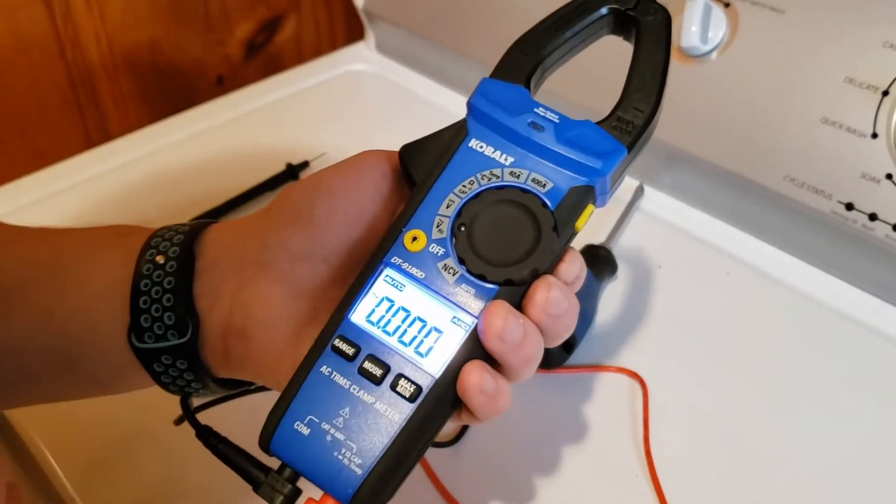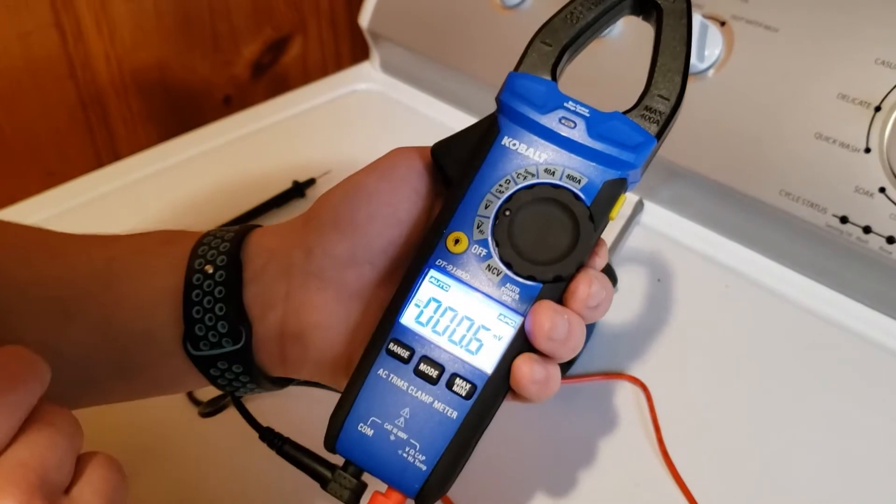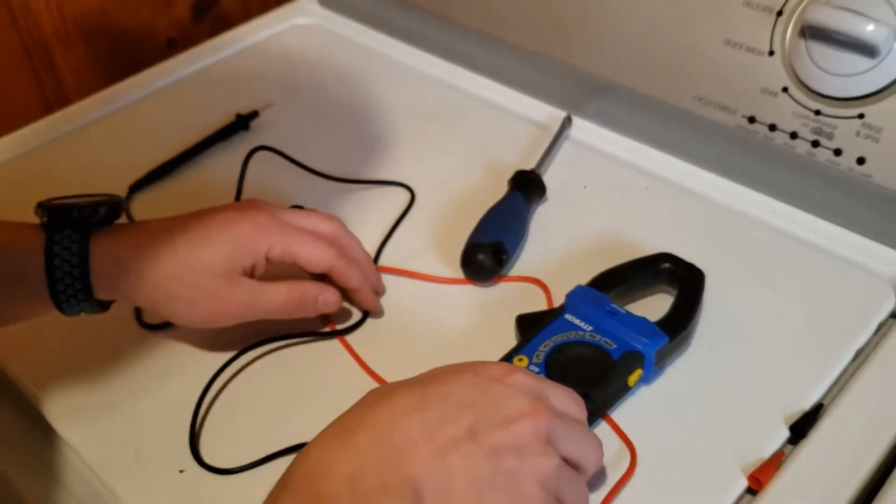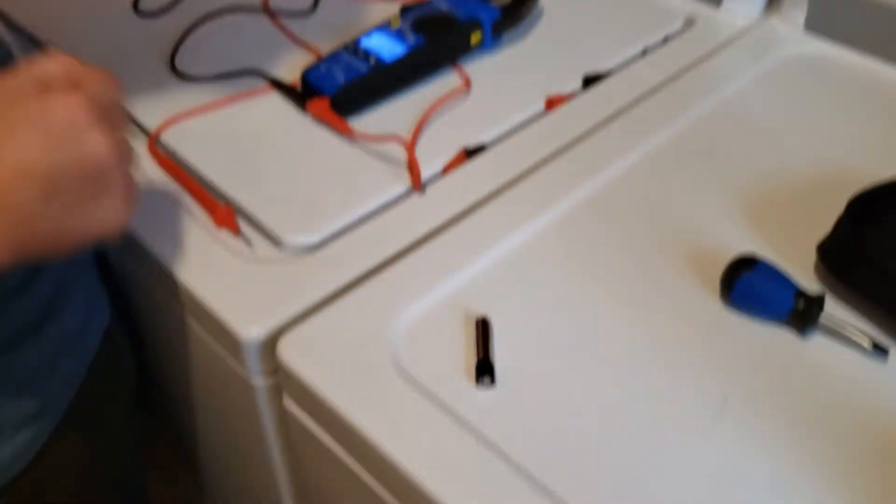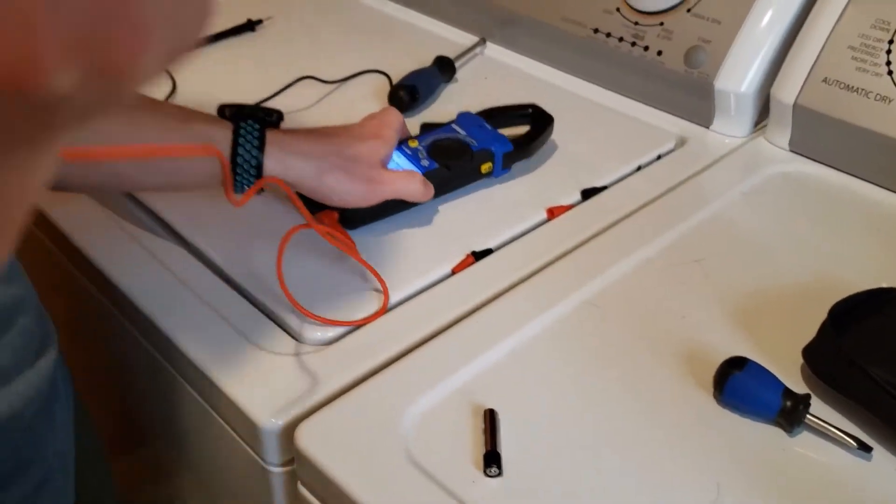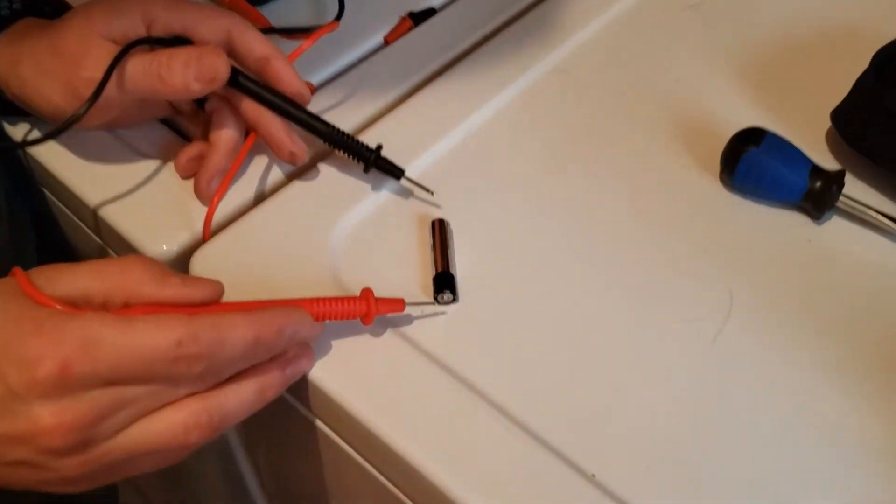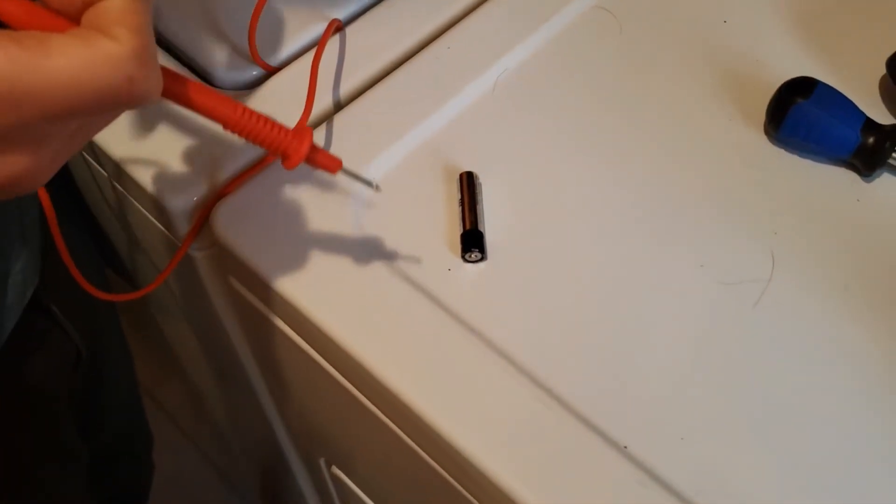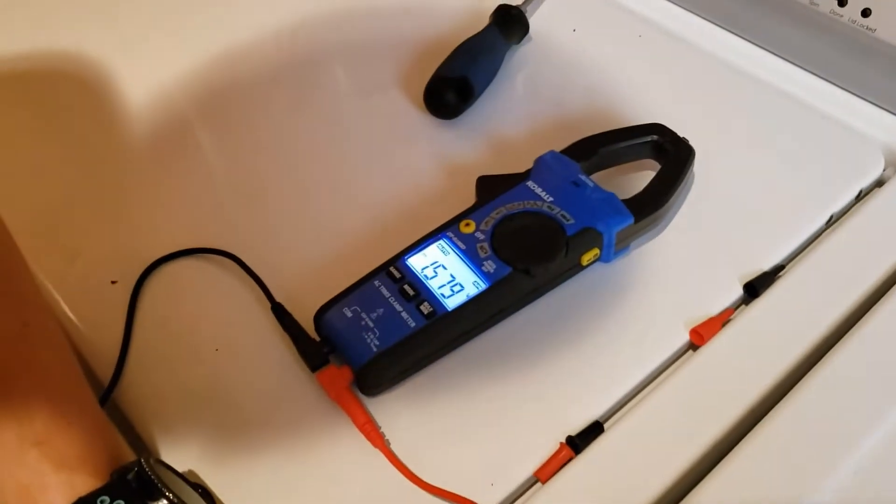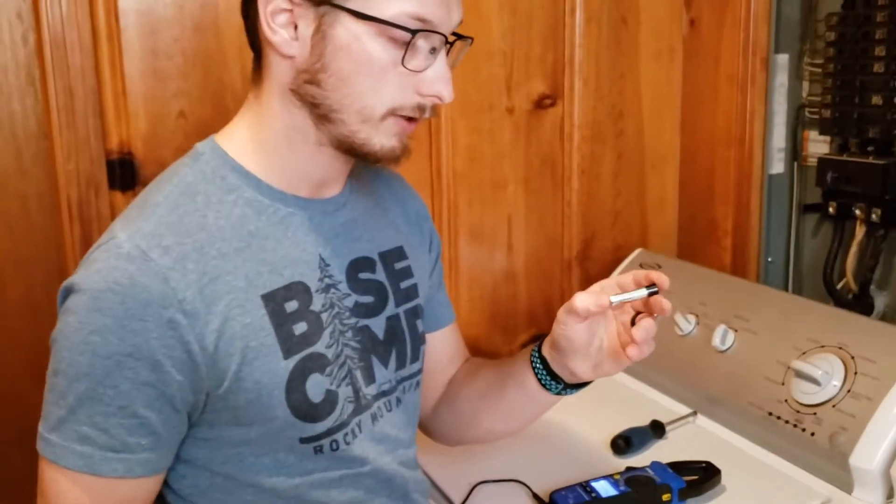The next thing you can do with a multimeter is direct current volts. So you go over here to this direct current. It's got a line and then little dots under it. And that's direct current. So say you've got a battery and you wanted to see if the battery was still good. You could take your positive lead here, your red and your negative, and just put it on there. This is supposed to read about 1.5 volts. We've got 1.56, 1.57. So this battery is still good.